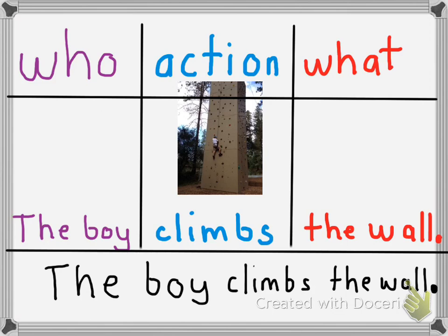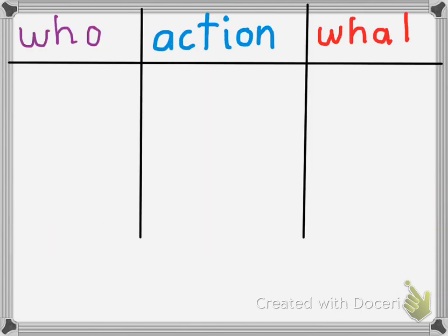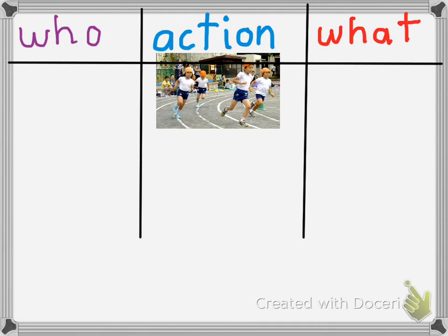Let's try it again. So first, we are going to make our three-part organizer. And in our three-part organizer, we have the who, the action, and the what. Now we're going to look at the picture and think about the picture in our mind. How can I write a complete sentence about this picture? So let's start with the who.